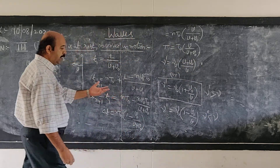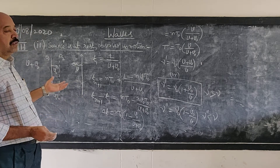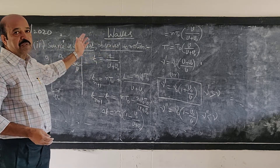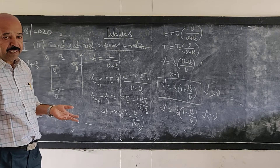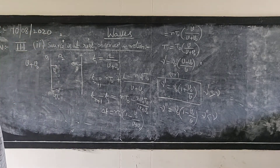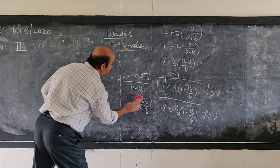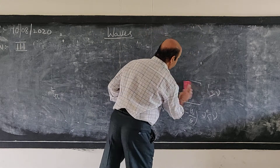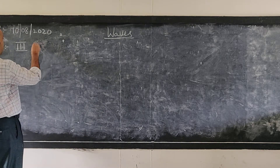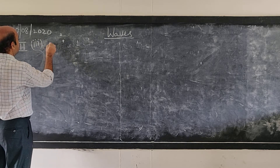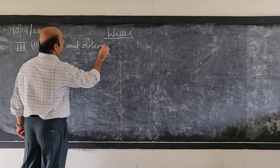So we have derived the equations for the case when the source is at rest and the observer is in motion. Now let us derive the general expression when both the source and the observer are in motion — that is the third case: both source and observer are in motion.